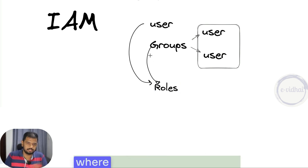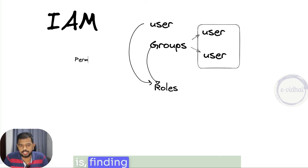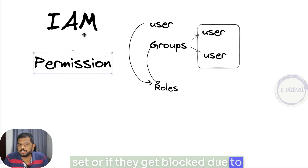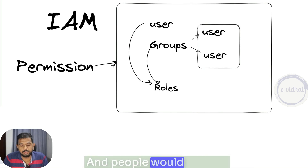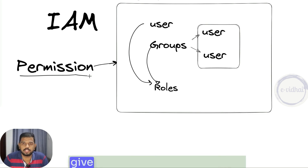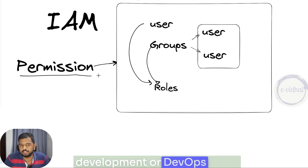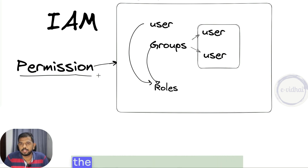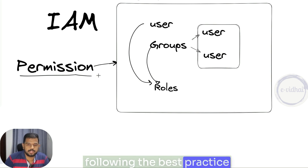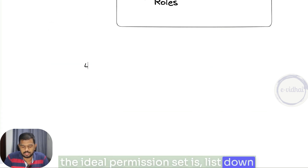These are the generic components where there are tons of resources available. But what we want to focus on is the major things people struggle with — finding the right permission set, or if they get blocked for a specific reason. People say this is time consuming, so just give me admin or wider permissions. There's always a clash between the management team who manages the AWS account versus the dev or DevOps team, who think it takes too long to get the right permission set versus following the best practice of going more granular. The best way is to list down what actions you would perform.